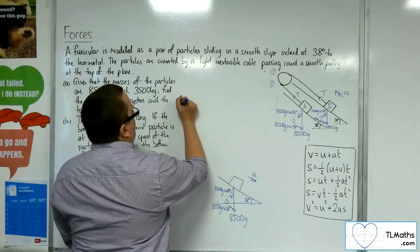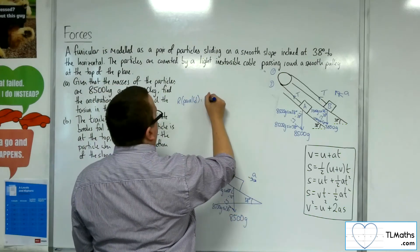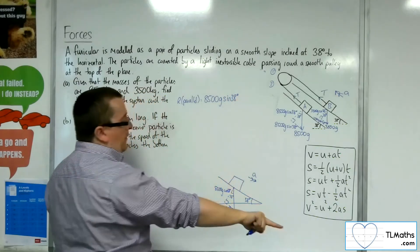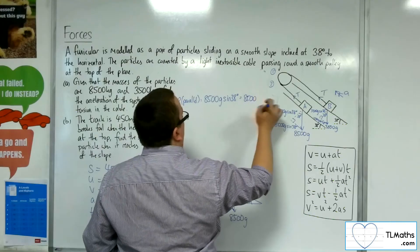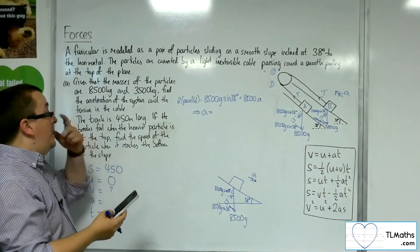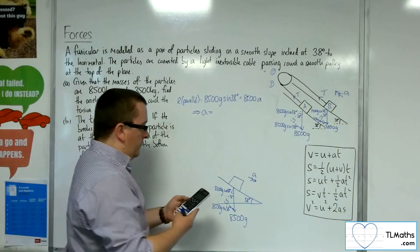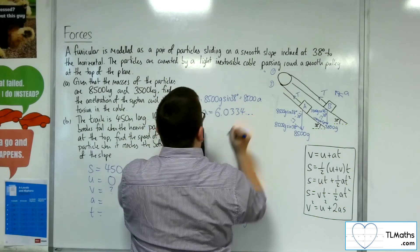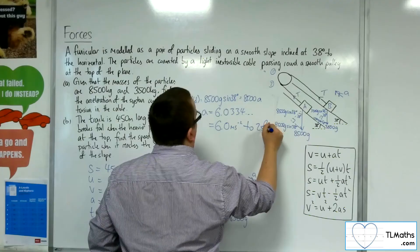Resolving parallel to the slope, I just have 8,500G sine 38 working down the slope, equal to mass times acceleration. The 8,500 cancels from both sides, so the acceleration is just G times sine 38, which is 9.8 × sine 38 = 6.03 metres per second squared to two significant figures.